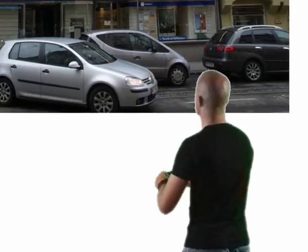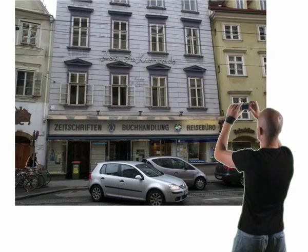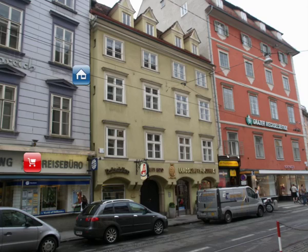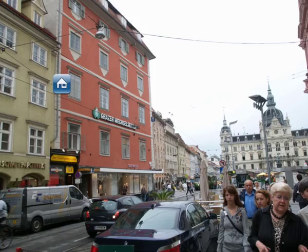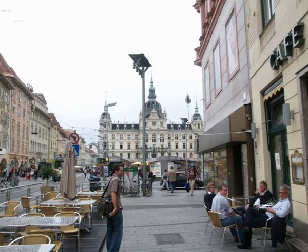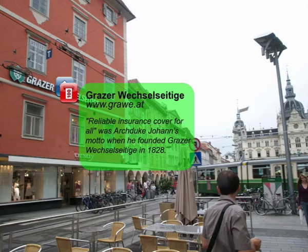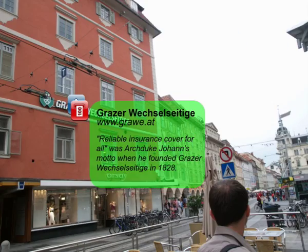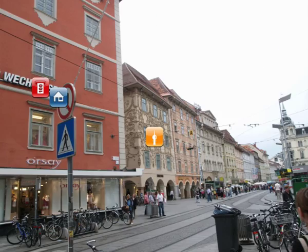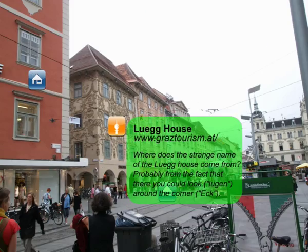Join me in a stroll through the fabulous city of Graz, Austria, and I'll tell you more. To use our system, you point your camera phone to an object of interest and snap a photo of it. Each icon you see is a hyperlink to information about a building. A simple tap of a finger is sufficient to access the information. No need to type in keywords on a phone's clumsy keypad.